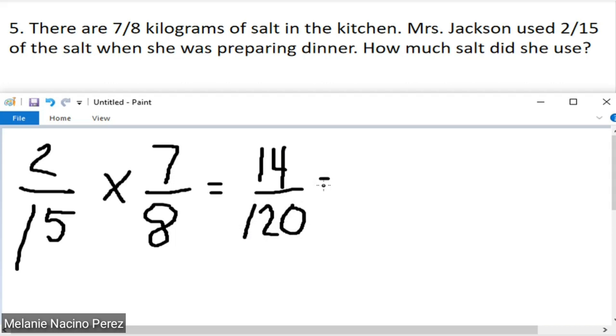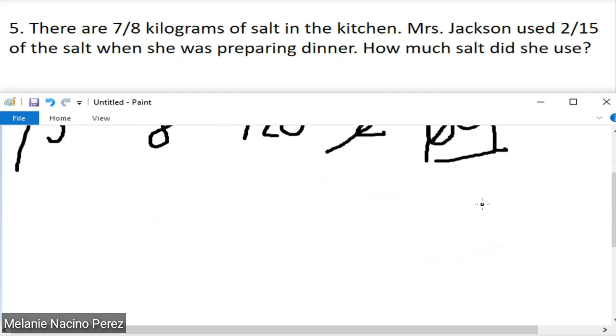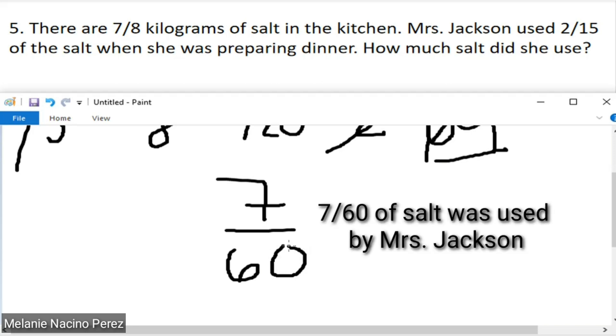Since we can still simplify this, just look for the factors of 14, which is 2 times 7, and the factors of 120 is 2 times 60. We will just cancel the numbers that have the same value and we'll get our simplified form, which is 7 over 60. The answer to number 5 is: 7/60 of salt was used by Mrs. Jackson.